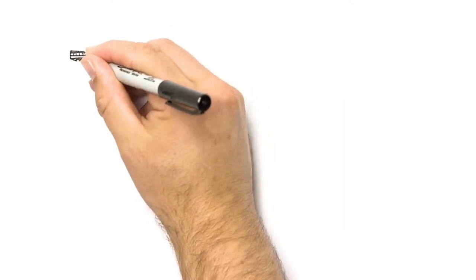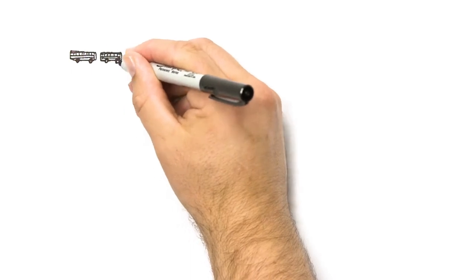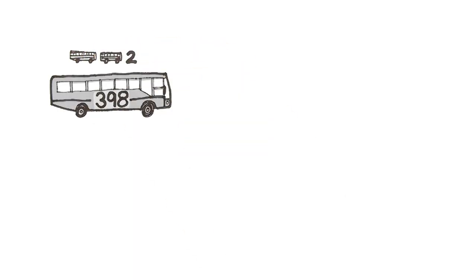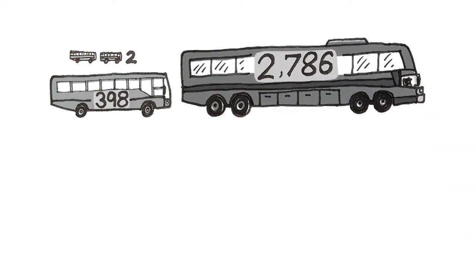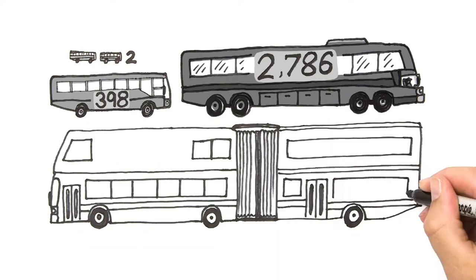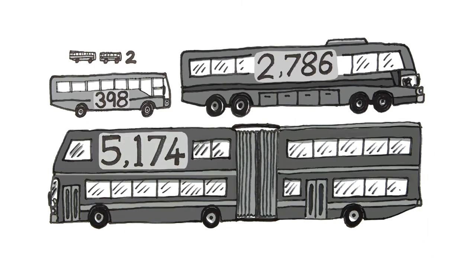Students like us who travel by bus spend a lot of their life on a bus. Two rides per day, 398 rides per school year, 2,786 rides while at primary school, which makes 5,174 bus rides from year prep to 12.